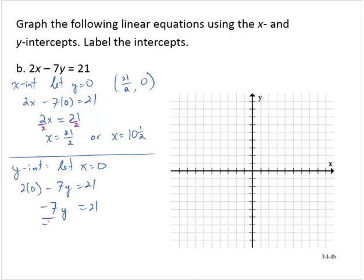And dividing through by negative 7, y equals negative 3. And so then we have the ordered pair 0, negative 3.